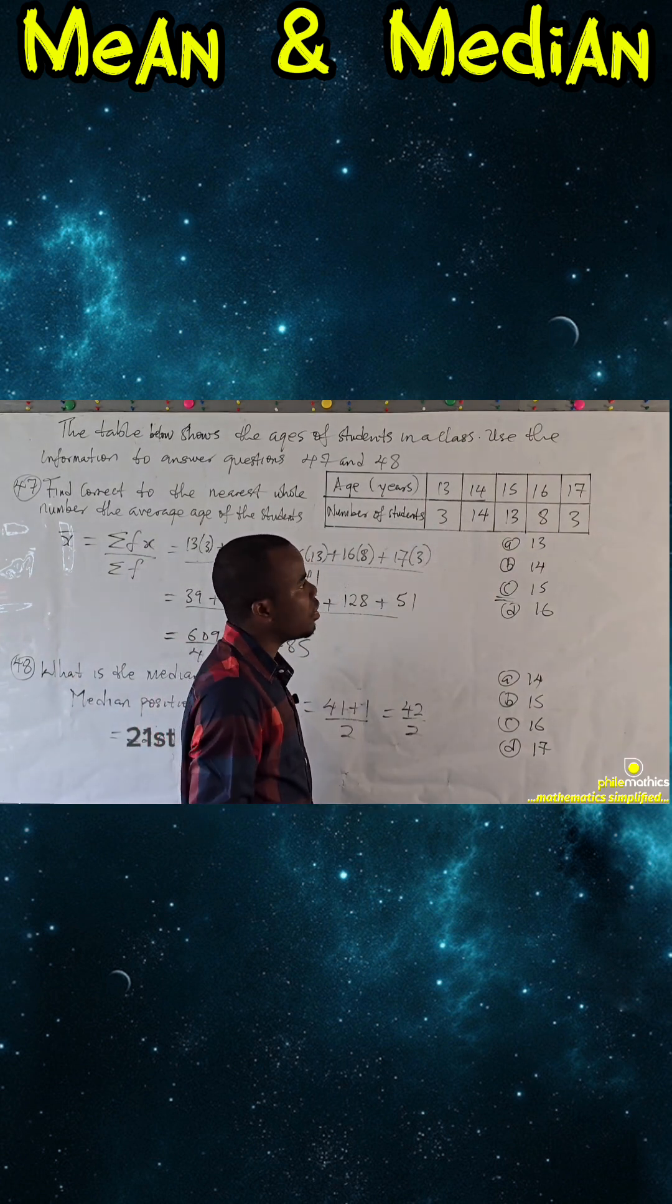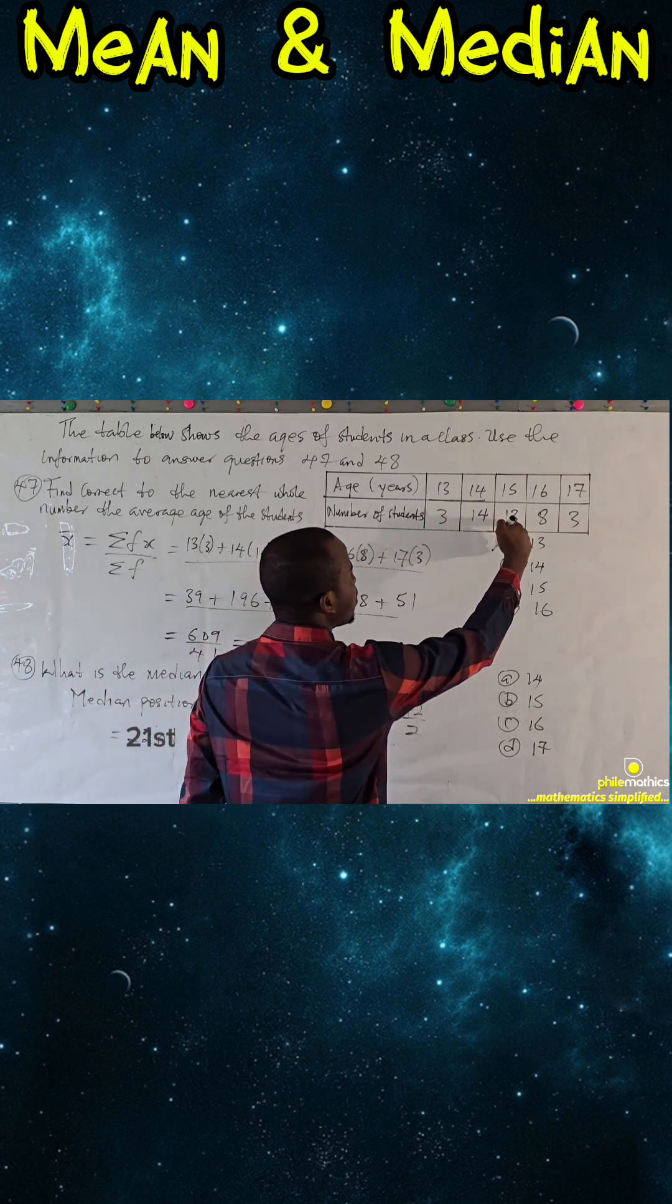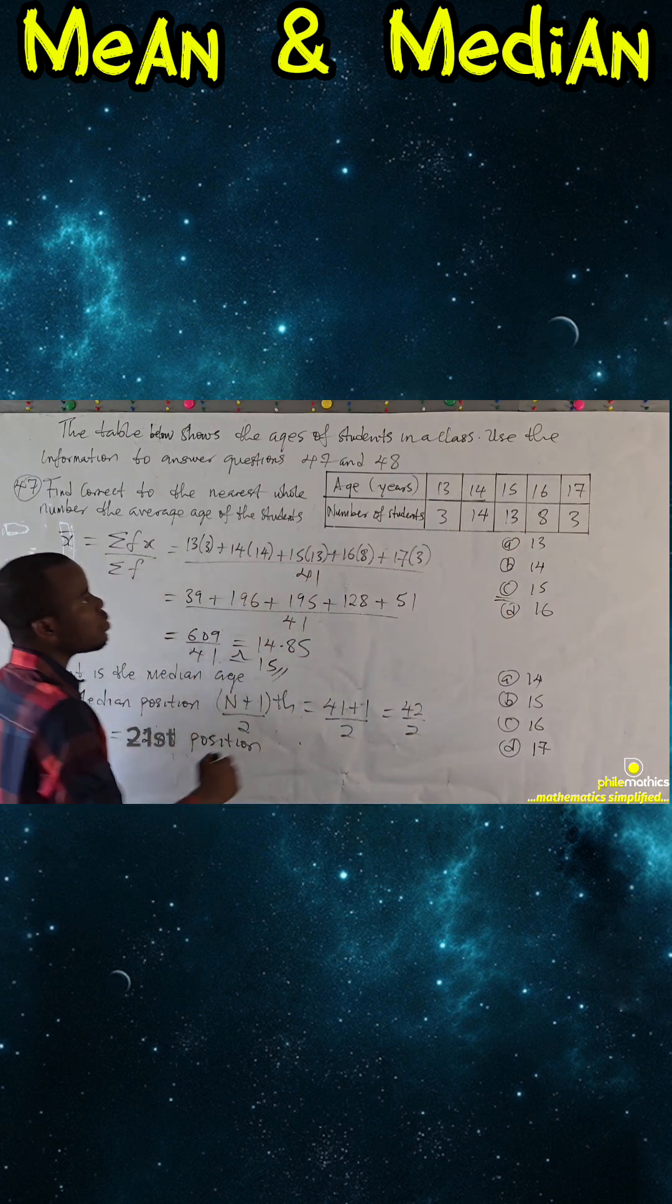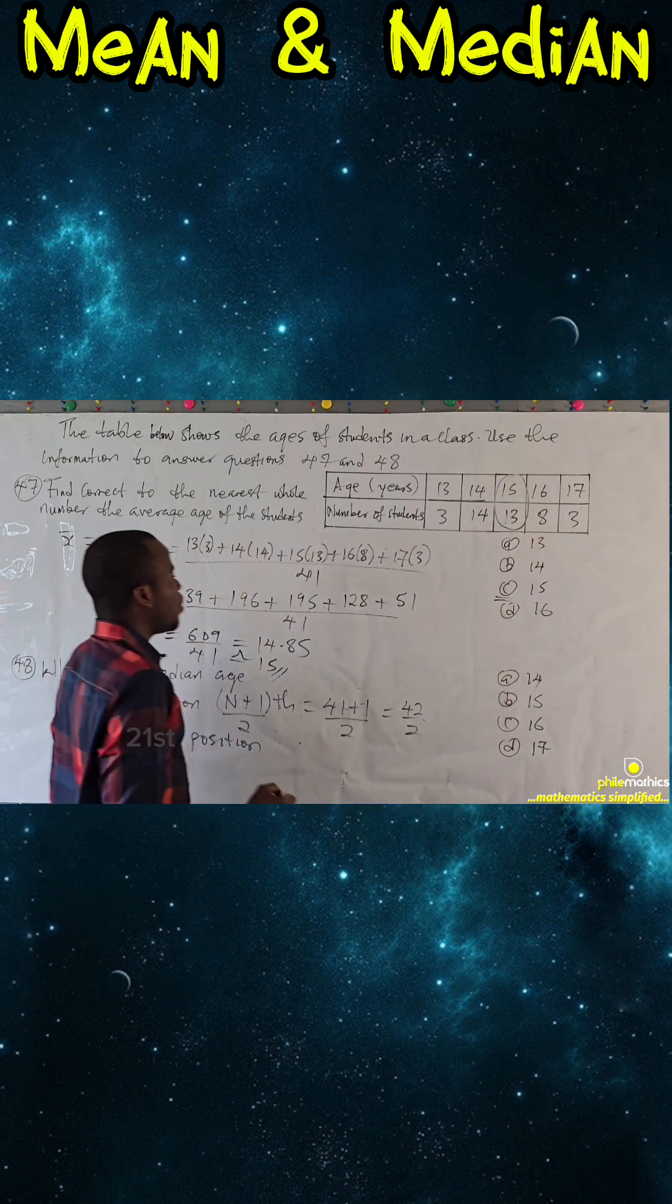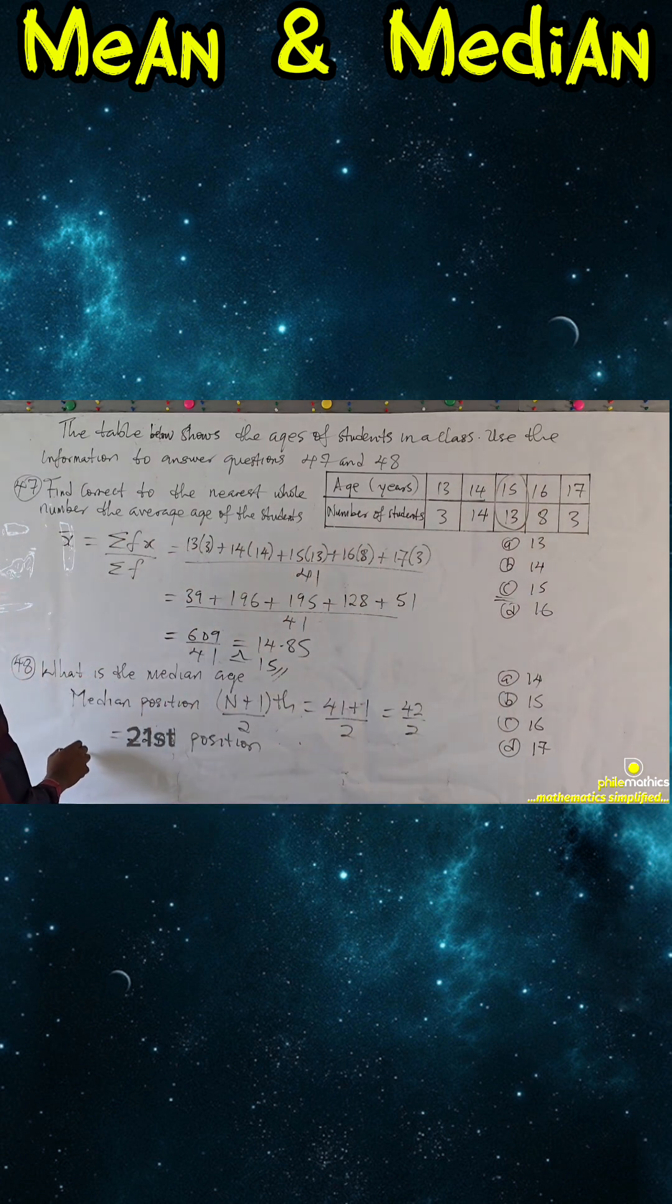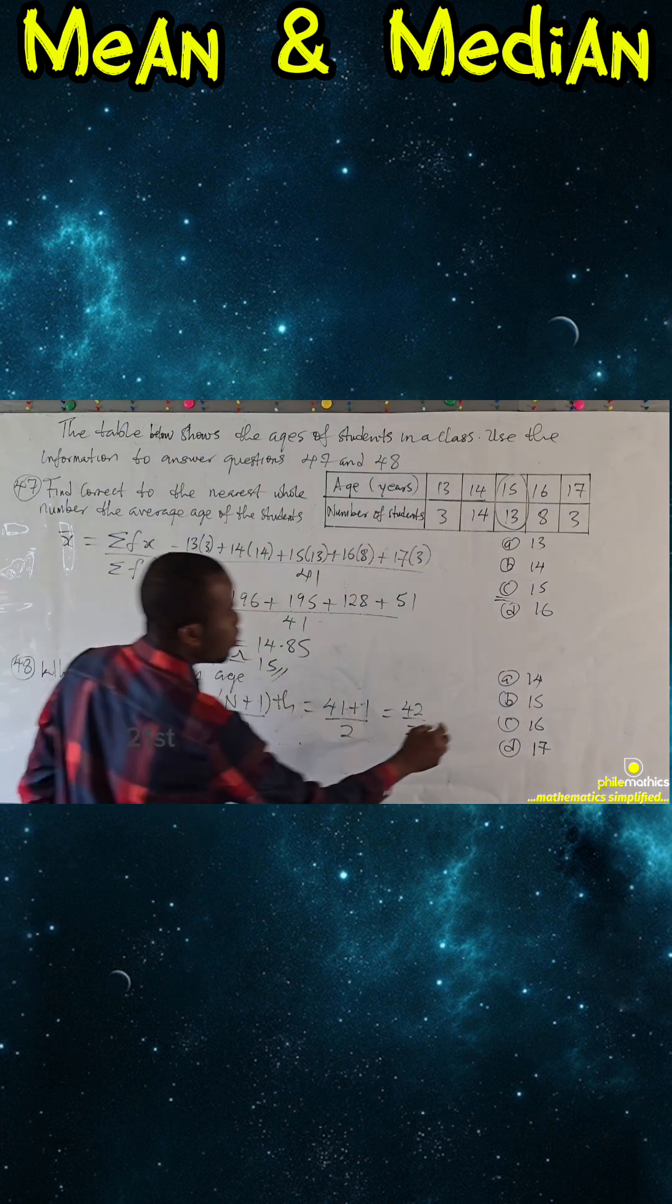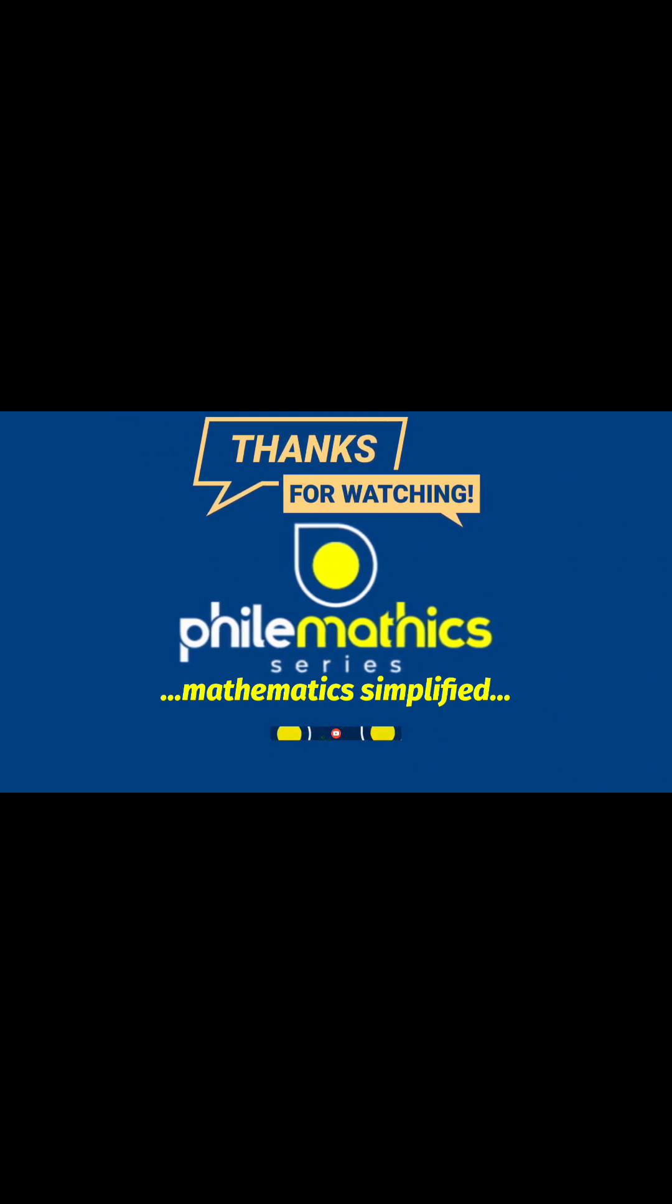17 plus 13 is 30, and we are looking for the position. This is where our median class will lie. So our median age is simply 15, which is D.